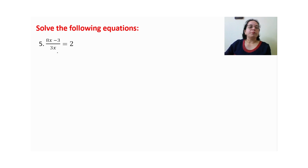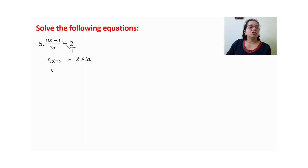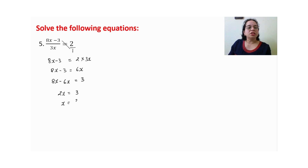Now the next question. जब form होता है: one rational number is equal to another rational number (a upon b = c upon d), तो cross multiplication करते हैं — denominator में कोई number नहीं है, it means 1. Cross multiply: 8x minus 3 multiplied by 1, and 2 into 3x = 6x. So 8x minus 3 = 6x. Shifting 6x: minus 6x, and minus 3 becomes plus 3 — so 2x = 3, x is equal to 3 upon 2. Convert to decimal or mixed fraction — choice is yours.